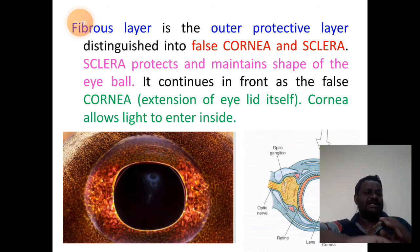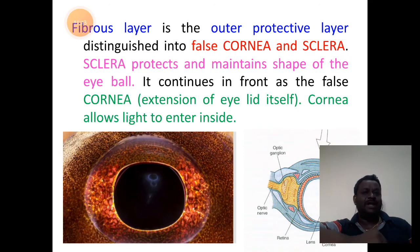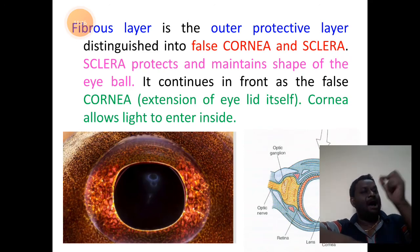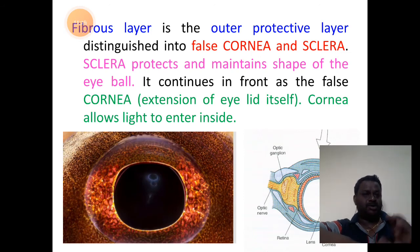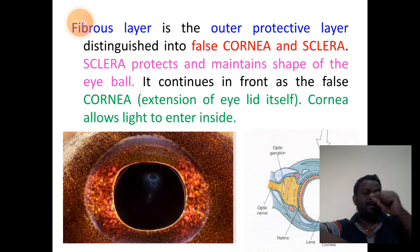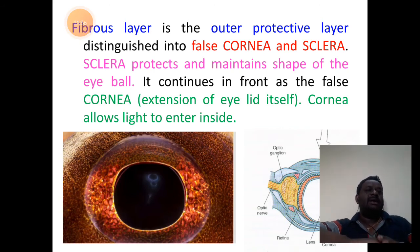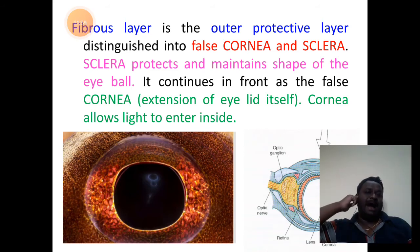The first layer is the fibrous layer. It forms the outer layer and is protective in function. The outer protective fibrous layer gets differentiated into two parts.